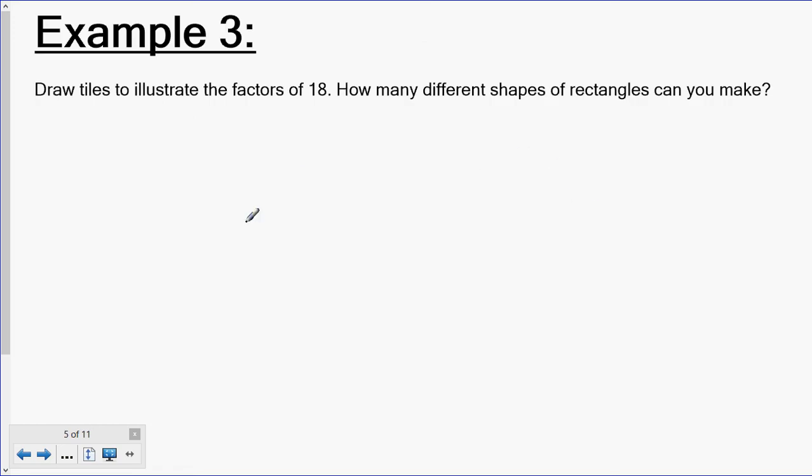Example 3. Draw tiles to illustrate the factors of 18. How many different shapes of rectangles can you make? The first one, which is the most annoying one, is the long, skinny one. This is a 1 by 18. So I'm just going to fill in 3, 4, 5, 6, 7, 8, 9, 10, 11, 12, 13, 14, 15, 16, 17, 18. That's definitely the most annoying one to do.